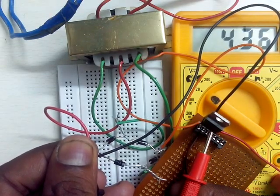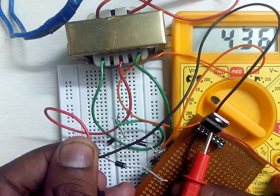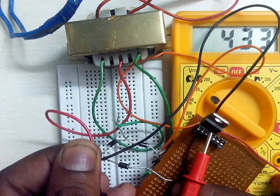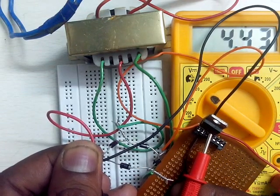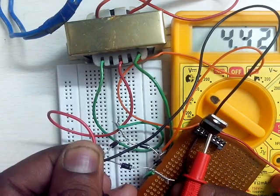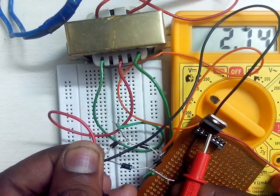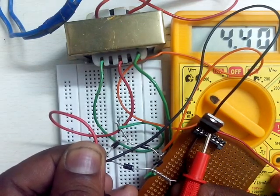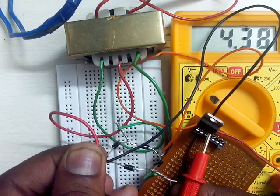There may be some difference in the output because at the input we don't have a complete 12 volts, so we are getting a little difference in the output as well. So this is how one can obtain a regulated supply of 5 volts from 230 volt AC.